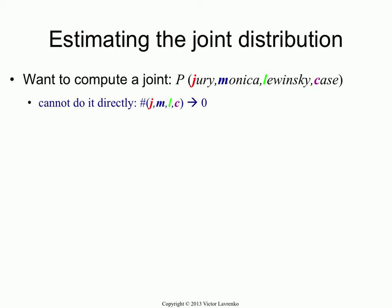And the reason for that is, this is the number of times that you see jury and Monica and Lewinsky and case. So for a short sample of words you might actually get a couple of counts for this, but in general as the number of words grows, all of your counts are going to drop to zero, right? Because pretty soon you'll be dealing with strings that just never occur.